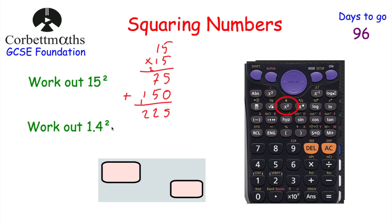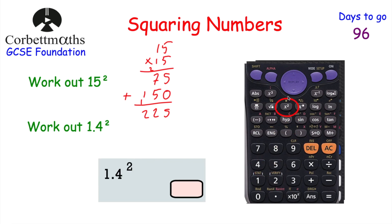Now let's look at squaring using a calculator. We've got 1.4 squared, which means 1.4 multiplied by itself. You could type 1.4 multiplied by 1.4, but it's important to know where the squared button is. On this type of calculator, you type in 1.4, press the squared button — that's x with a little 2 above it — and it displays 1.4 squared. Press equals and you get the answer 1.96.